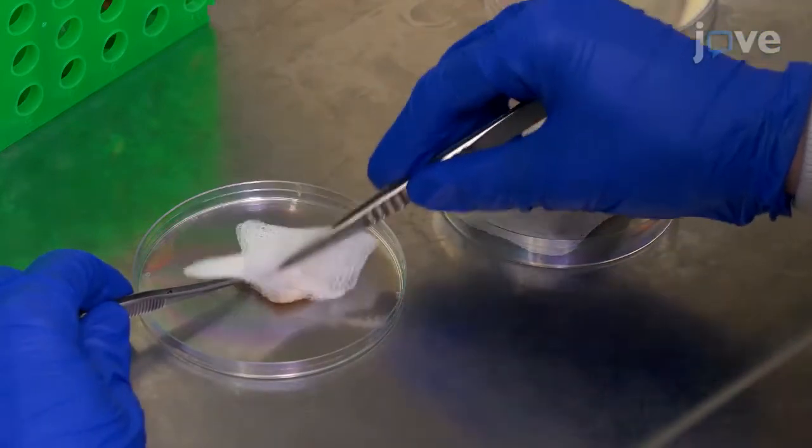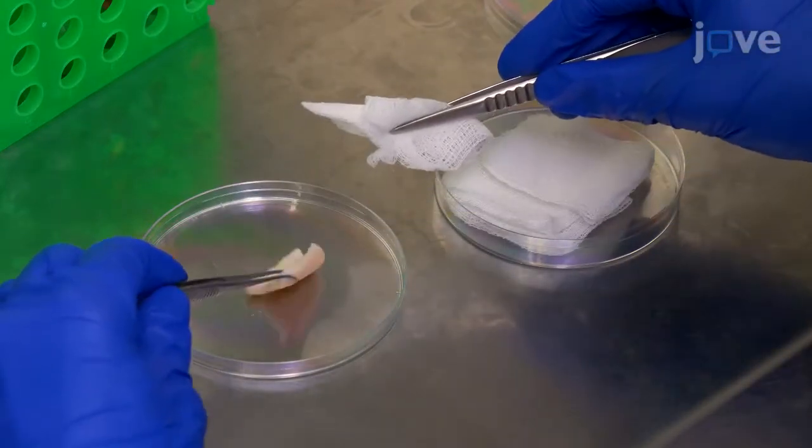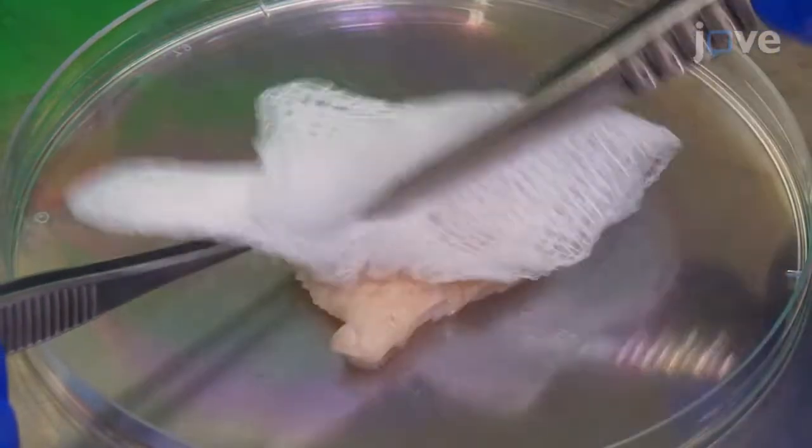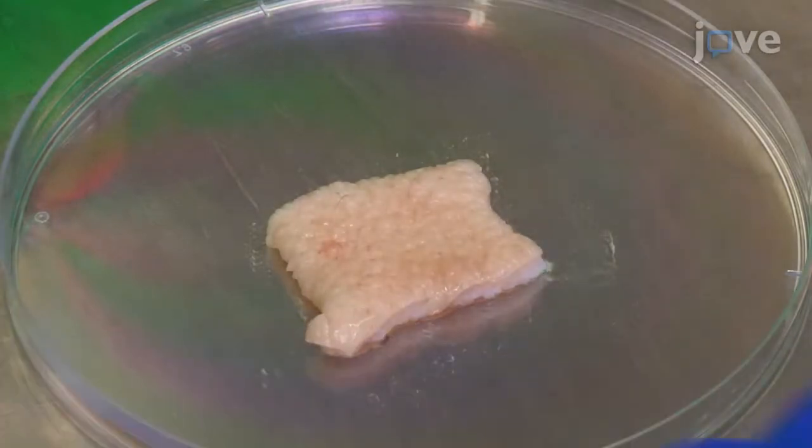Place the dried skin dermis side down on a clean 90 millimeter petri dish lid to remove any residual DPBS and dab the epidermis dry with fresh sterile gauze.